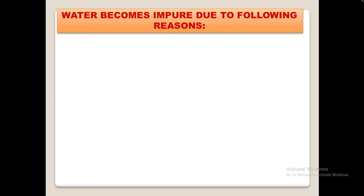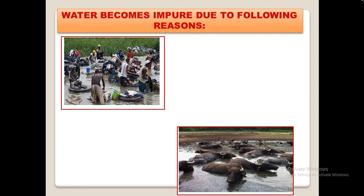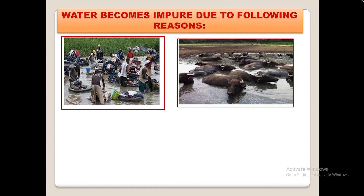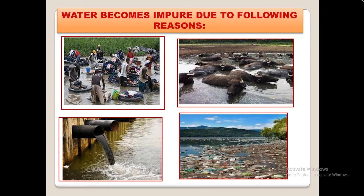Water becomes impure due to the following reasons: people wash dirty clothes in water; people take animals for a bath in water; drainage water is let into the source of water; and garbage is thrown into the source of water.